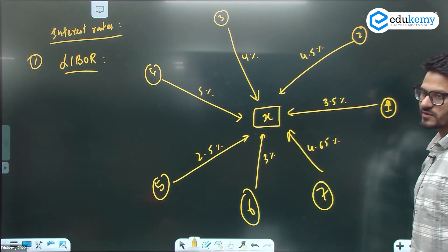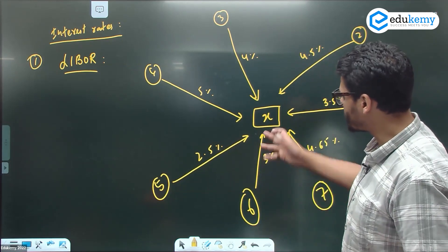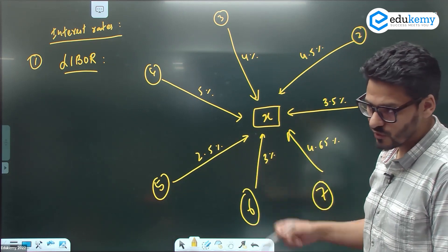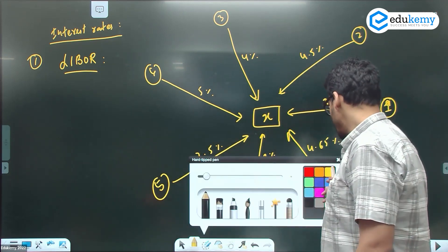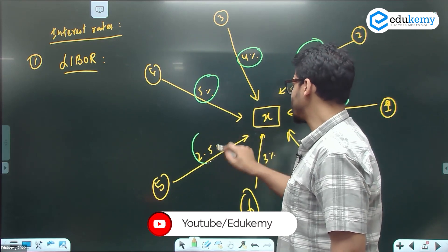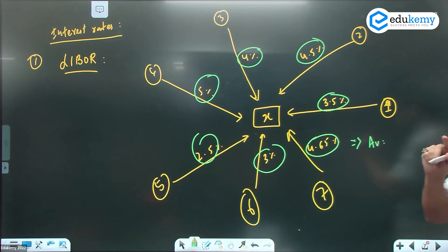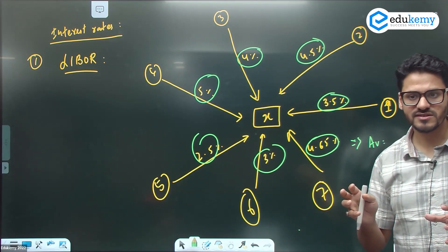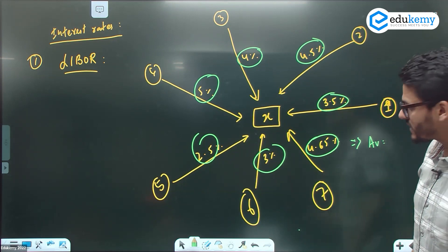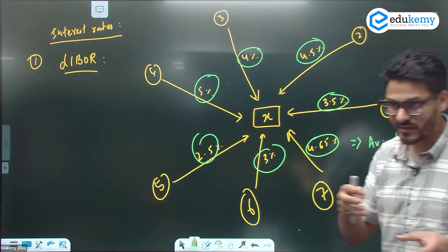These banks are offering loans to this bank at different rates in London. These are interbank rates between banks — when one bank gives a loan to another bank, it is giving the loan at a particular offer rate. Now, what we will do is take an average of all these rates, to get an idea of what the interbank offer rate is in London. That average rate is known as LIBOR — London Interbank Offer Rate.